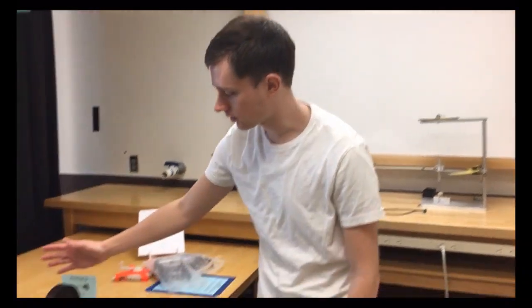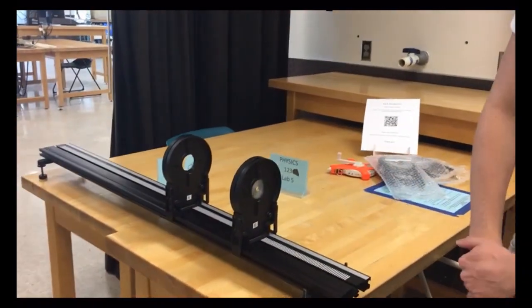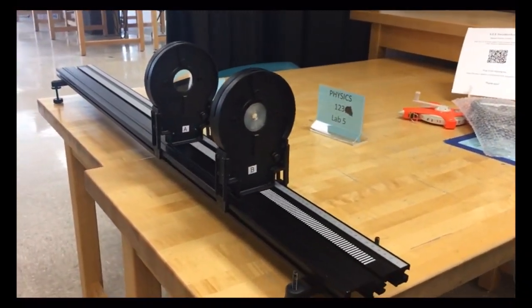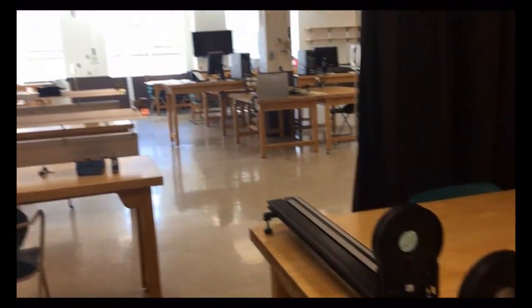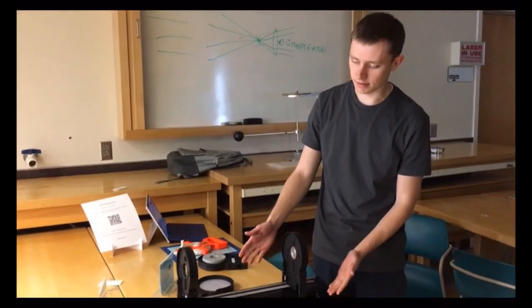Welcome. We're going to be doing Physics 123, lab number 6, the telescope. This is our telescope here. We've just got two lenses, and we're going to be able to magnify a distant object with this apparatus. So this is our telescope here.